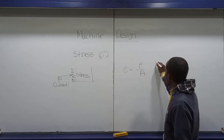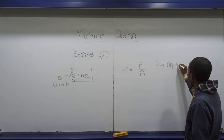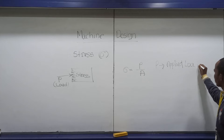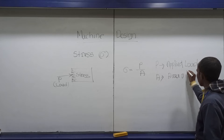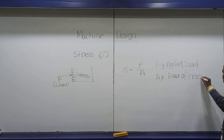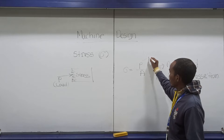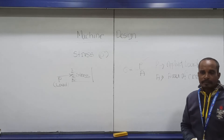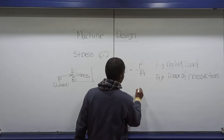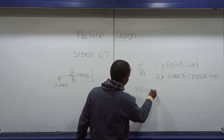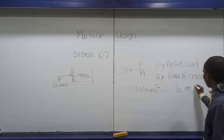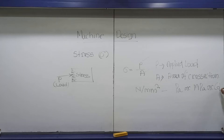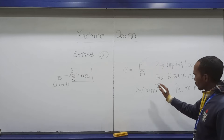Here P is your applied load and A is your cross-sectional area. P is applied in Newton and A is in mm². The unit of stress is given as Newton per mm² in the SI system. These are the units of stress.